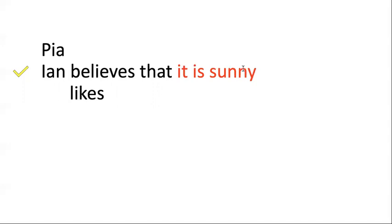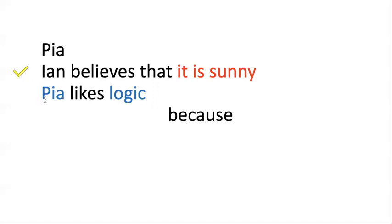The next one was "likes." There were two gaps here. What can you put on the sides of "likes"? We need a noun phrase — we'd say something like "Pia likes logic." So the things that go on the sides of "likes" are not whole sentences, they're nouns or objects. This is not a sentential connective because the things that go in its gaps are not whole sentences. I can't say "it is sunny likes it is rainy" — that's ungrammatical.